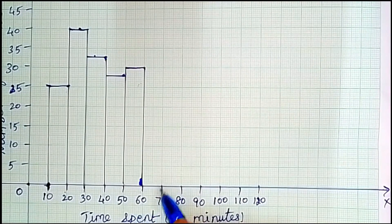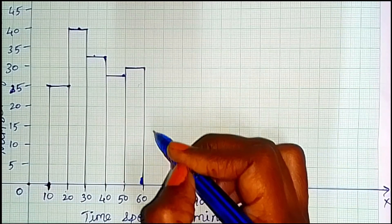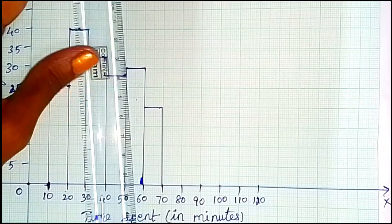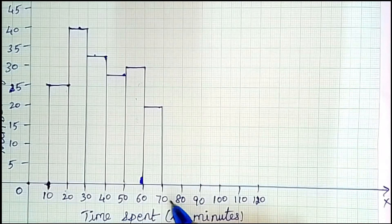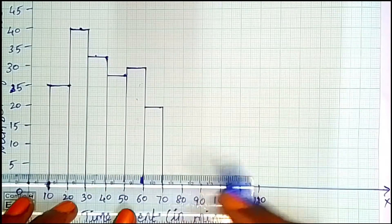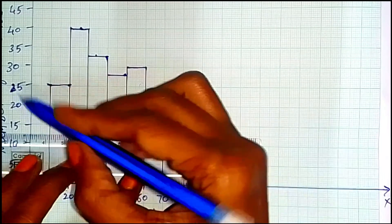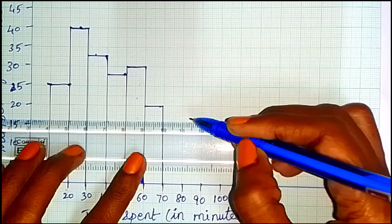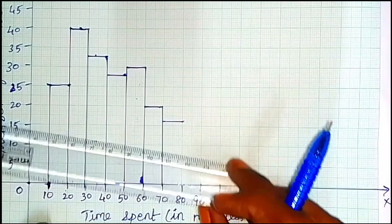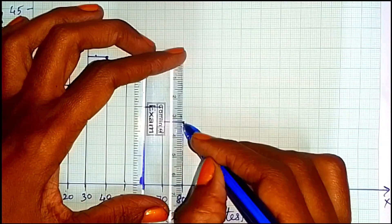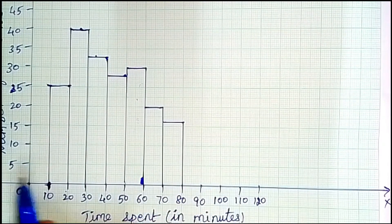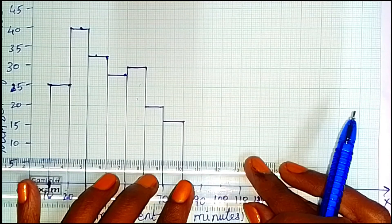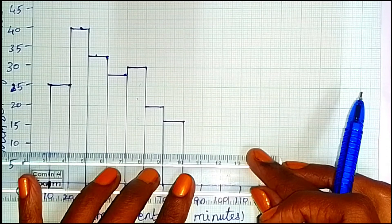So 62 to 70 has 20 students — that rectangle is complete. For 72 to 80 with 16 students: 15 is the second line, so the second line is 16 students. For 80 to 90 with 8 students: 5 is the base, the 4th line is 7 students, and the 6th line is 8 students.